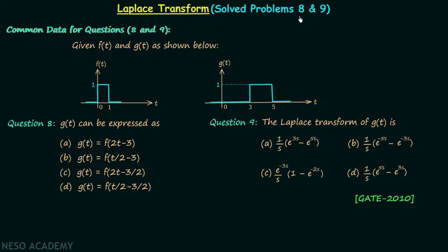Let's solve problem number 8 and problem number 9 in this lecture. We are solving the two problems together because they are based on the same data, and the whole thing appeared in GATE 2010 Electrical paper. We will first focus on the common data given, then solve question number 8, and once we have the correct answer we will move on to question number 9.